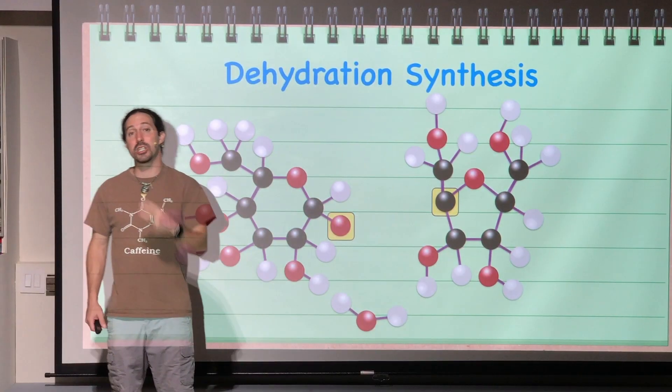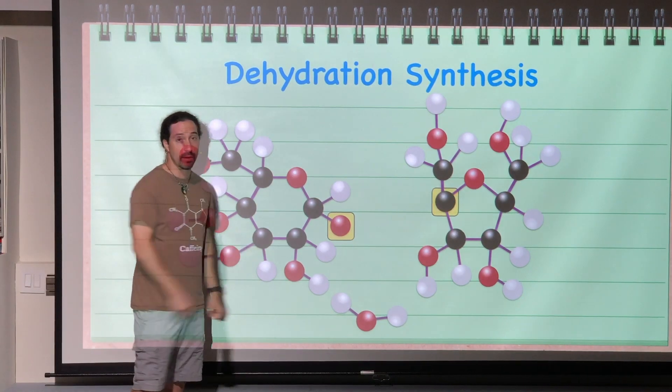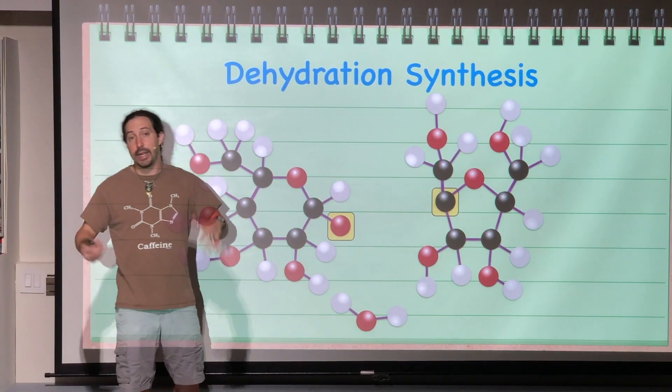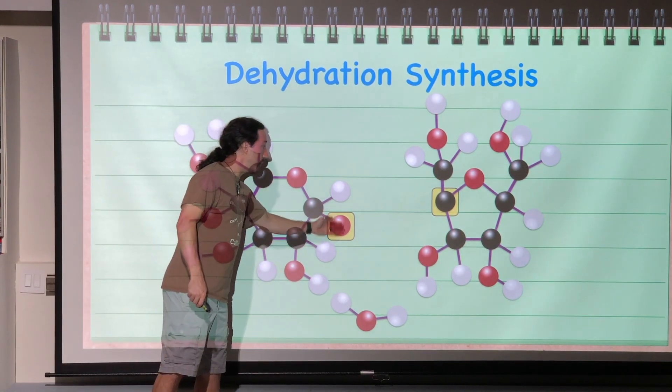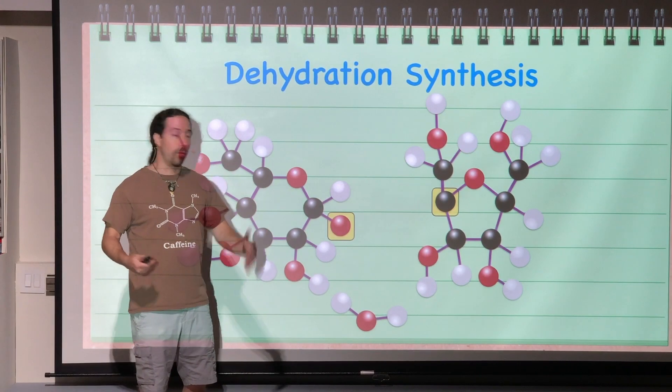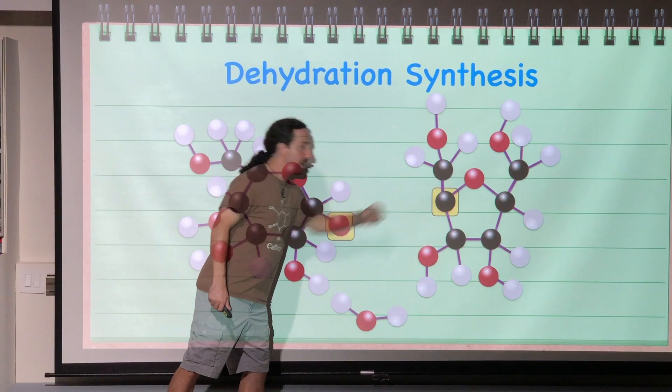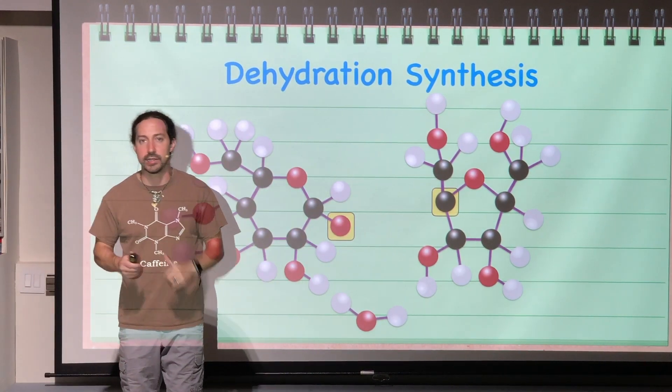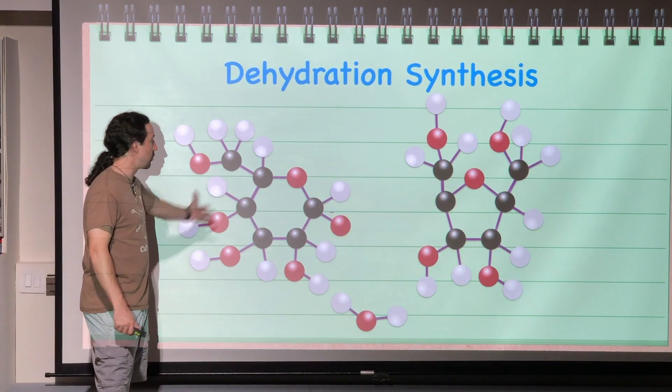we know it wants to make four bonds. But right now this carbon only has three bonds. And we know that oxygen makes two bonds, and right now it's only made one bond. So the oxygen needs to make another bond and the carbon needs to make another bond. And you can probably see where I'm going with this. So let's bring these two molecules close together.